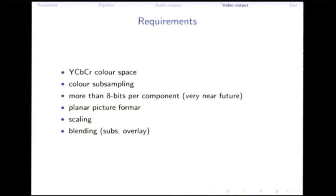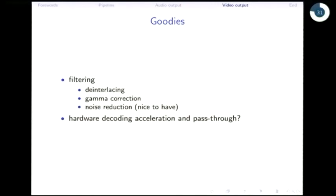For video, we need YUV support, subsampling support for 4:2:0 and 4:2:2 where you have less color information. Coming this year mostly is 10-bit support — 10 bits per component rather than 8 — which means 1 billion colors rather than 16 million. We need proper picture format support, hardware scaling, and hardware blending, because doing that in the CPU is silly. The goodies are filtering, gamma correction, resolution handling, and so on.